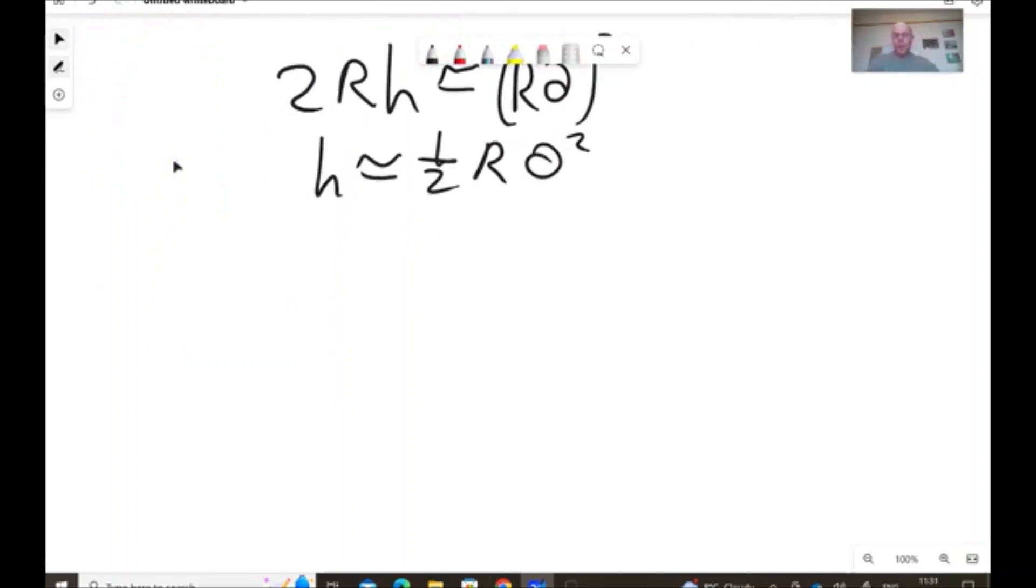So, a full rotation is 2π, but we are not interested in that. We are interested in the fraction, the angle that Earth rotated in a time, small t. So, it's 2π t over capital T, where capital T is 24 hours.